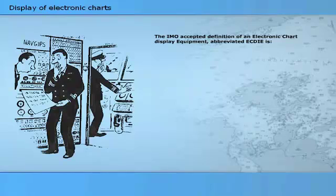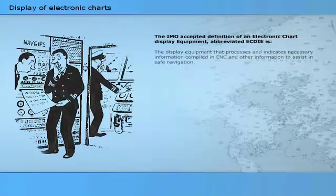The IMO accepted definition of an electronic chart display equipment, abbreviated ECDIE, is: the display equipment that processes and indicates necessary information compiled in ENC and other information to assist in safe navigation.